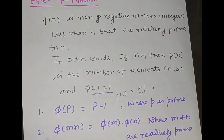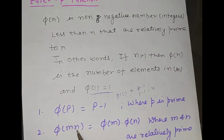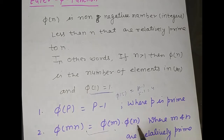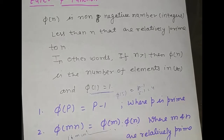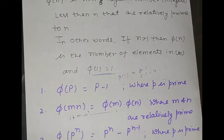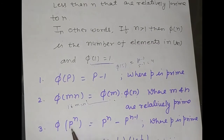The next formula is φ(m·n), where m and n are relatively prime. This formula is applicable only when m and n are relatively prime; we can express this as φ(m) · φ(n). If m equals n, then this formula is not applicable.